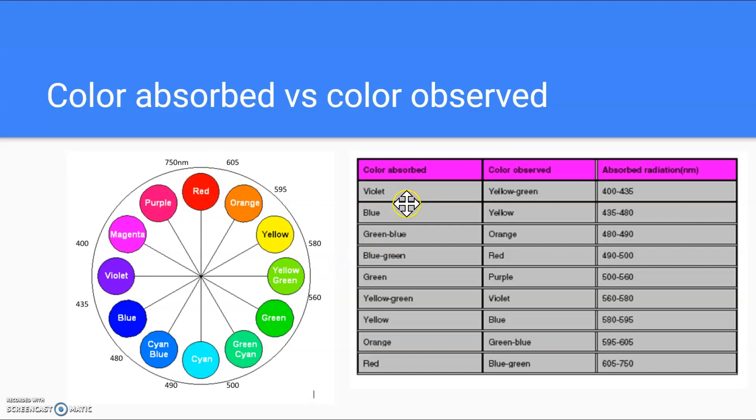So here is a list of colors that are absorbed. And then this would be the color we observed. And this is the wavelength of that light. So ours, we observed a blue-green color. So it absorbs in the red range, which is between 605 and 750. If our solution was yellow, if it appeared yellow, it would be absorbing blue light, which would be 435 to about 480. So it would absorb in this range. So the color that you see is because it is absorbing the complementary color on the color wheel.